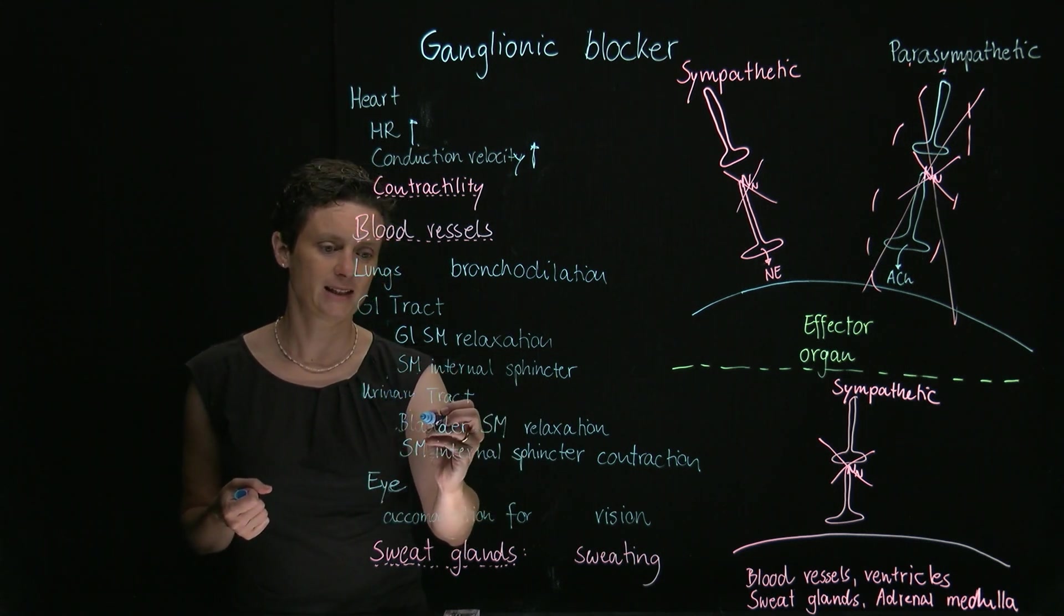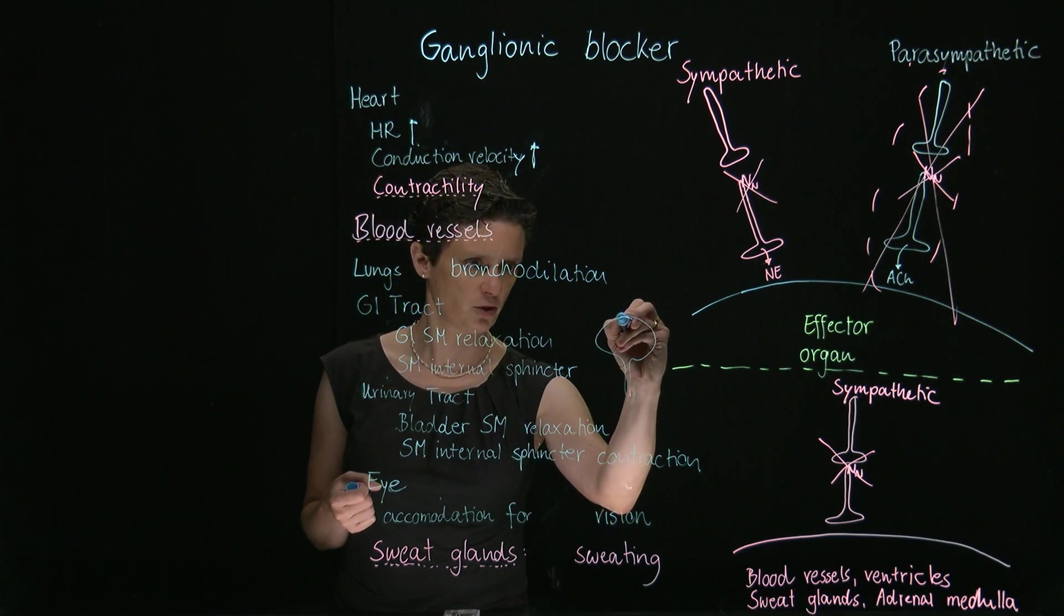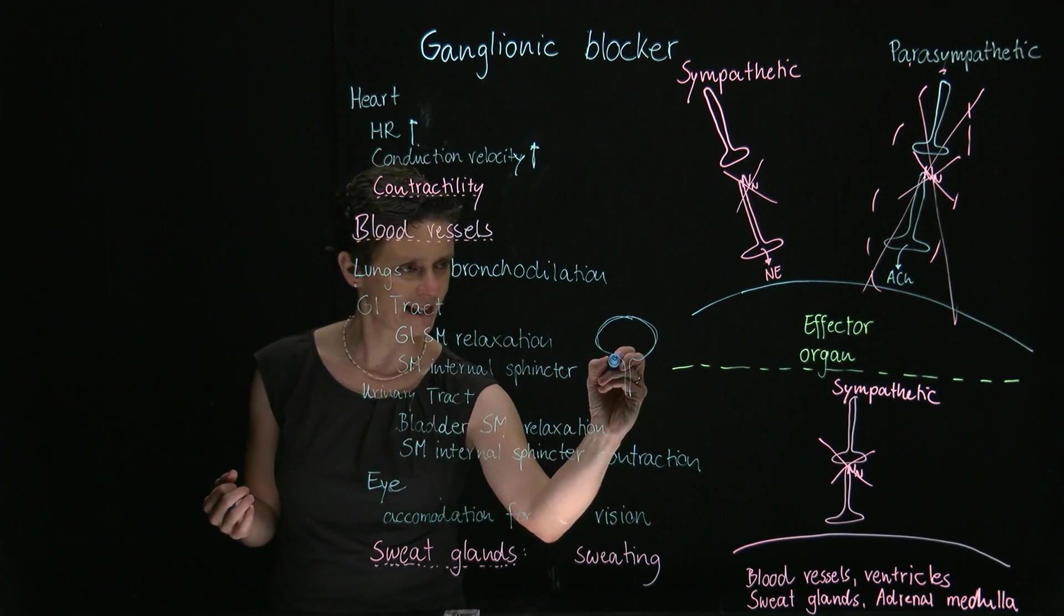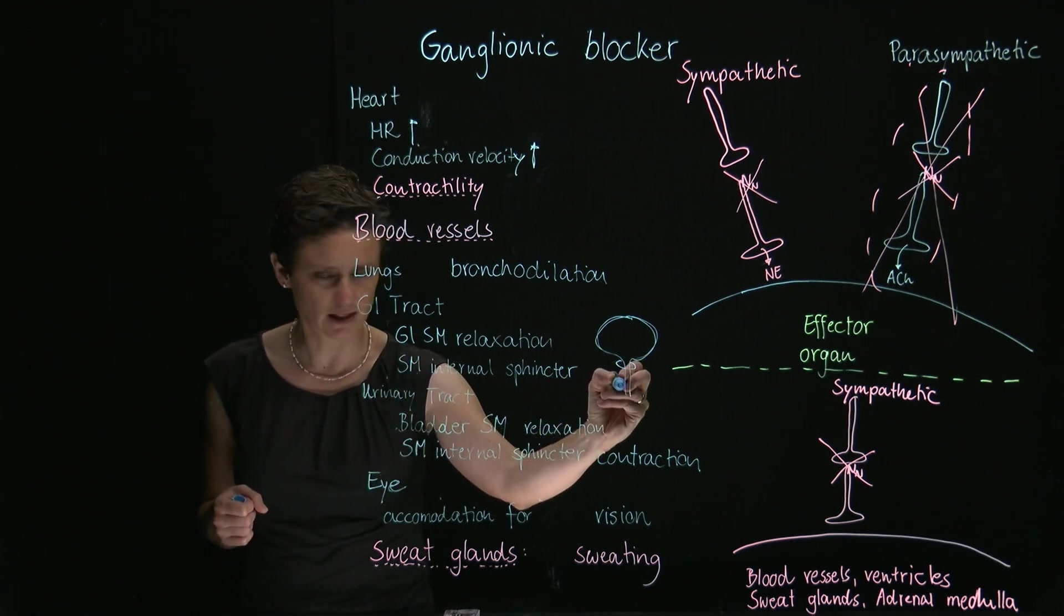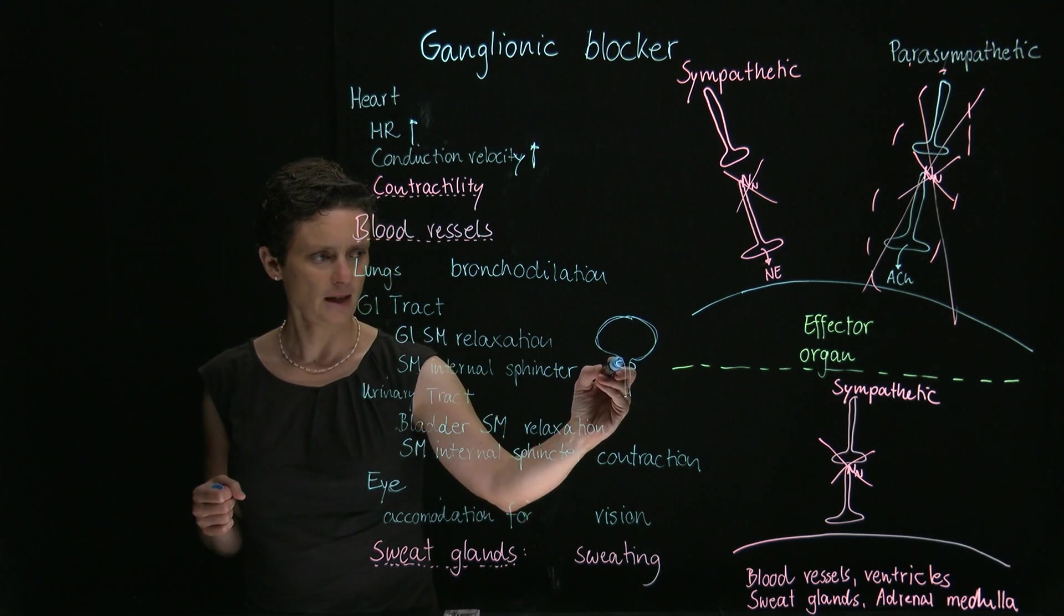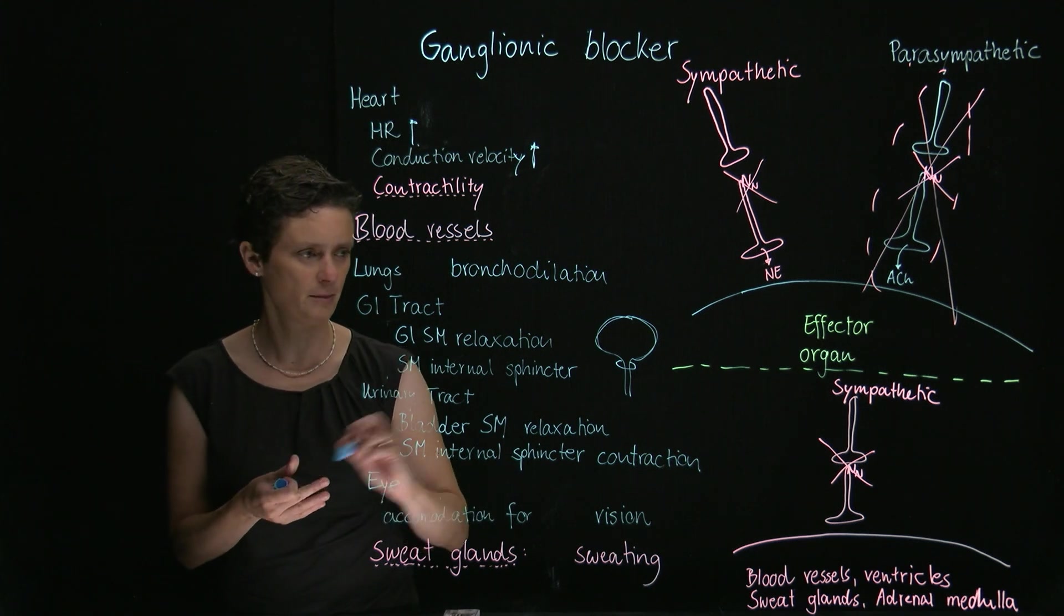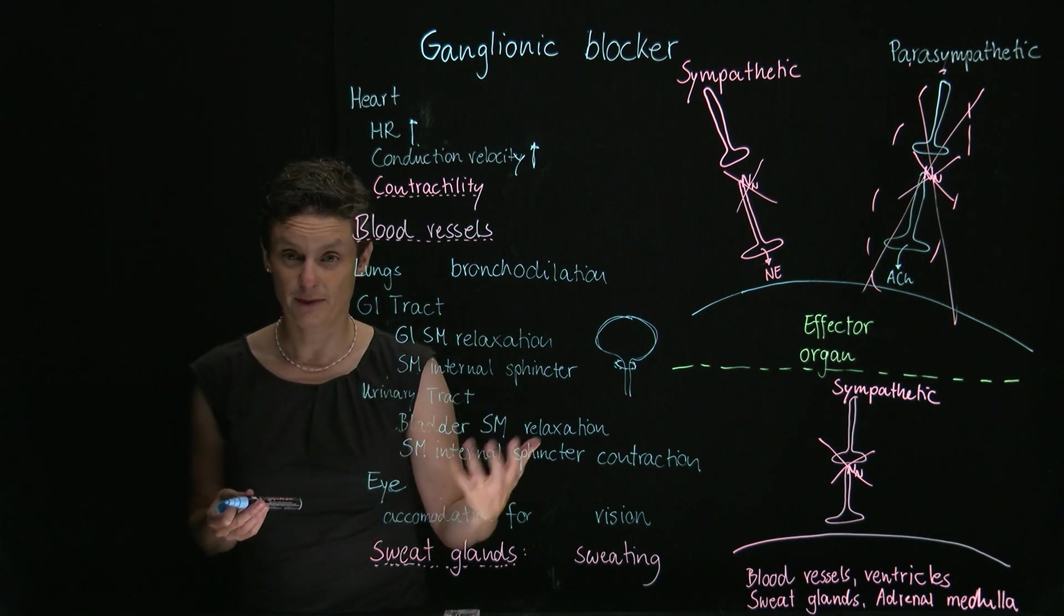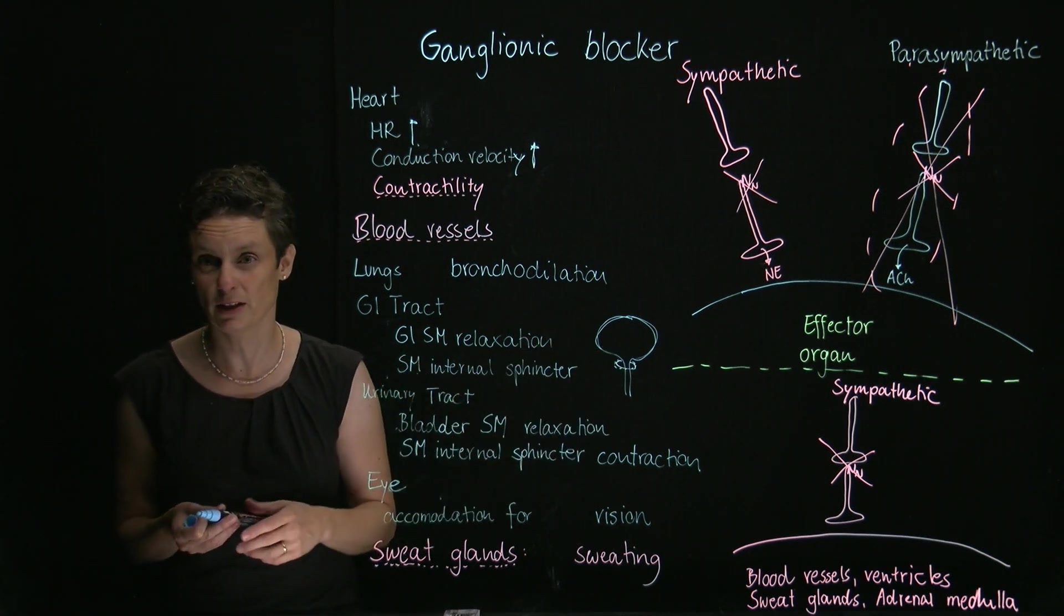The urinary tract, same. The bladder smooth muscle should relax. If that's your bladder, the detrusor muscle here should relax so you can fill the bladder as much as possible. But here the internal sphincter should be contracted, so urine is not going to come out through the urethra. Remember, there's an internal sphincter which is under the control of the autonomic nervous system, but there's also an external sphincter of skeletal muscle, which is under voluntary control, and that's what toilet training is all about.